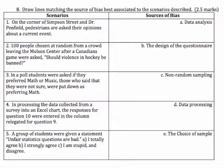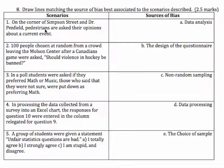Scenario one: on the corner of Simpson Street and Dr. Penfield, pedestrians are asked their opinions about a current event. It's not data analysis — there's no data here. The design of the questionnaire hasn't been discussed. Non-random sampling could be it. We're asking people at a very specific location in Montreal — right outside our school, near McGill University, near consulate row. There are a lot of consulates there, so you're not really getting a random sample of the population. I would say that's non-random sampling.